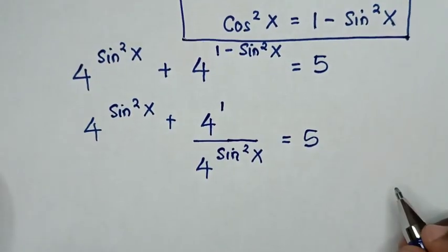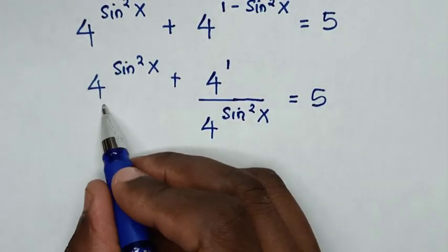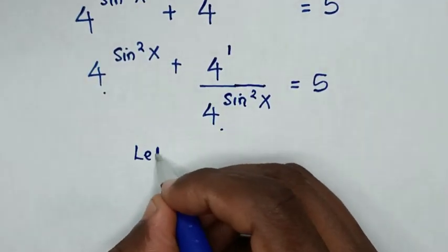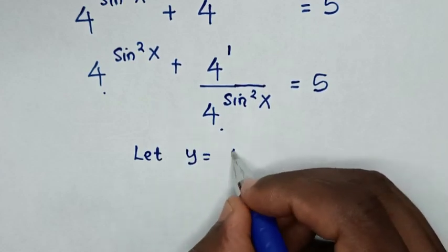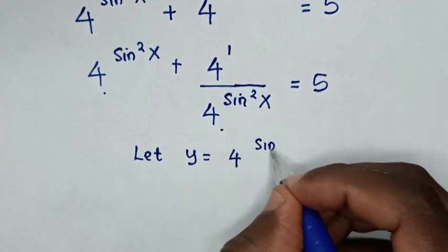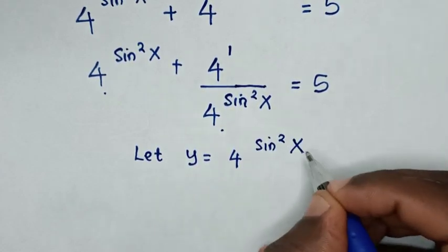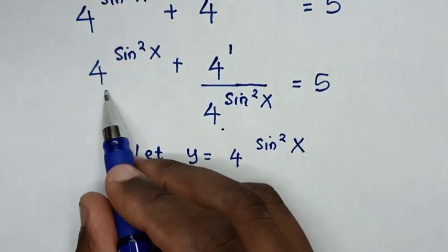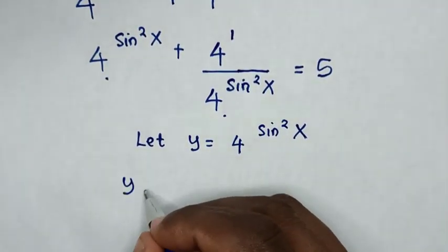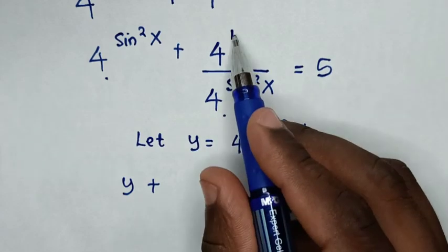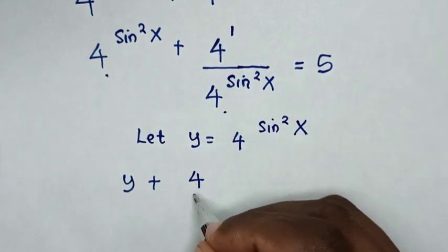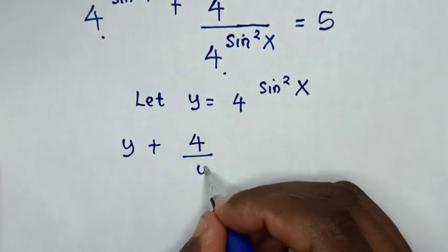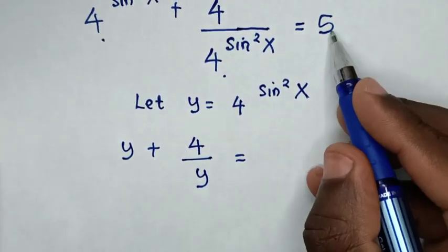In the next step, from our equation, 4 power of sine square x is common. So we let y equal to 4 power of sine square x. Then our equation becomes: y plus 4 over y is equal to 5.